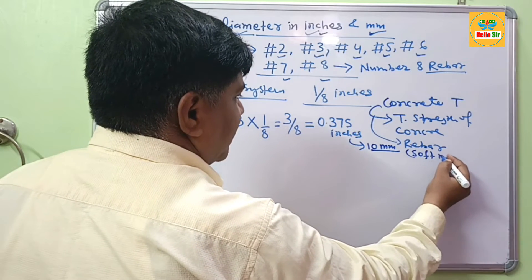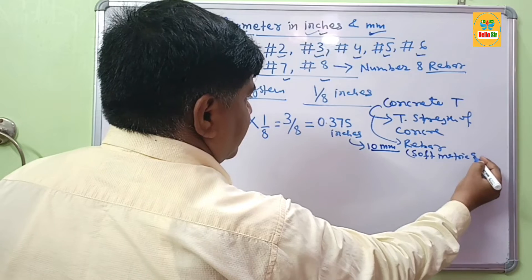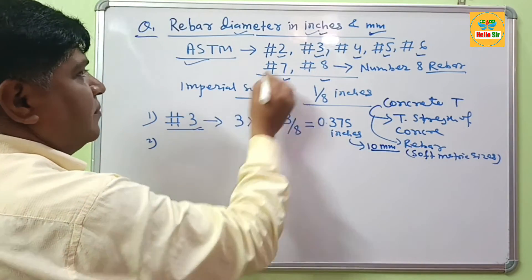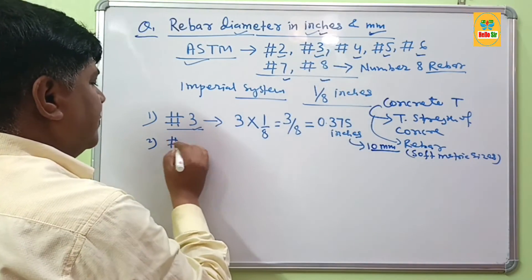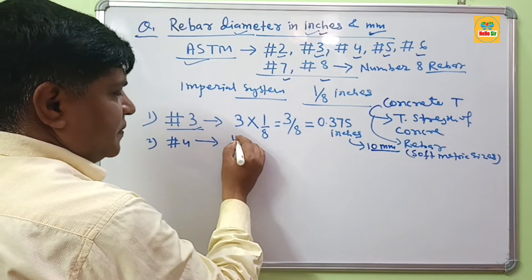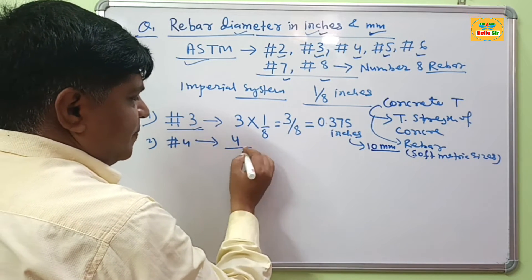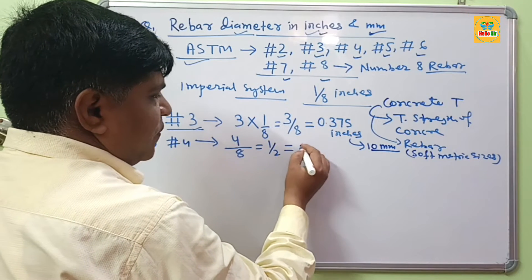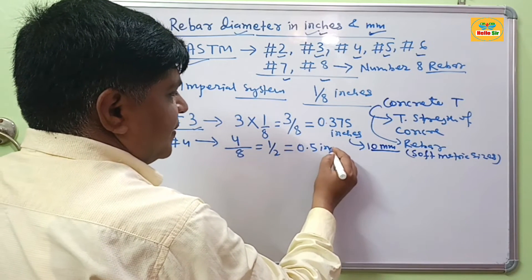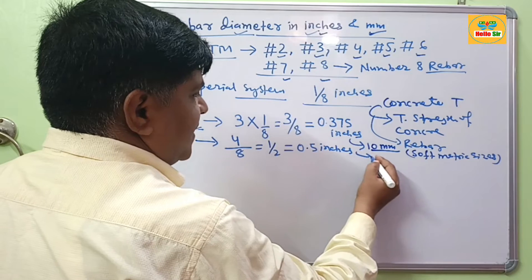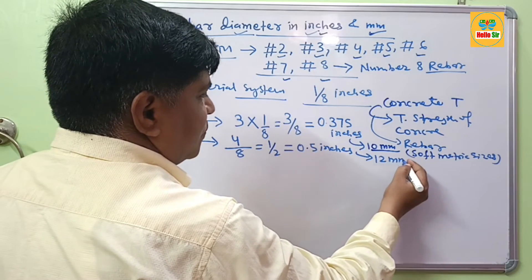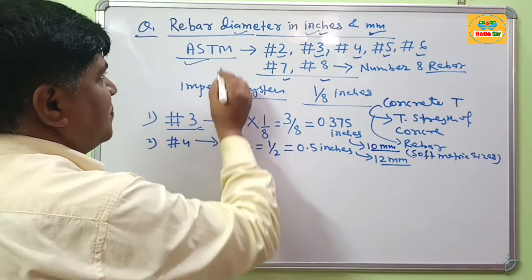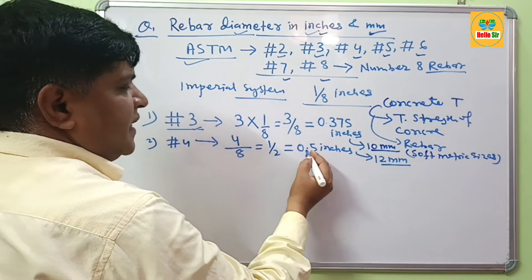If you have a number 4 rebar, multiply 4 by 1/8, giving you 4/8, which simplifies to 1/2, equal to 0.5 inches. In soft metric sizes, this equals 12 mm. So the diameter of number 4 rebar is 0.5 inches or 12 mm.